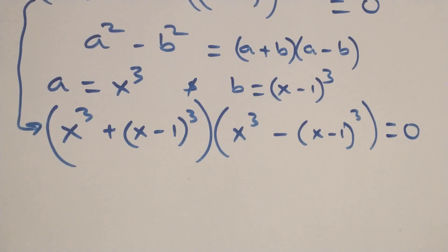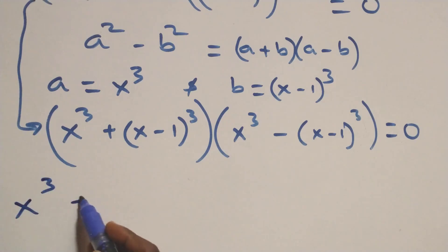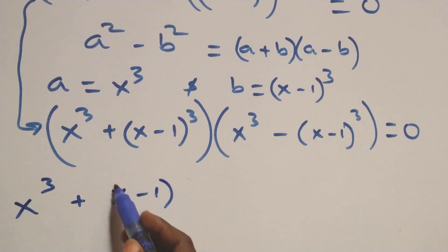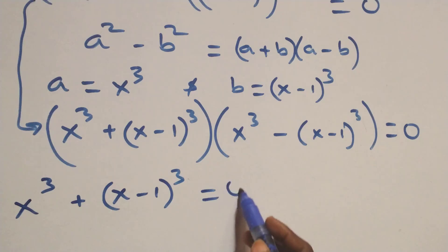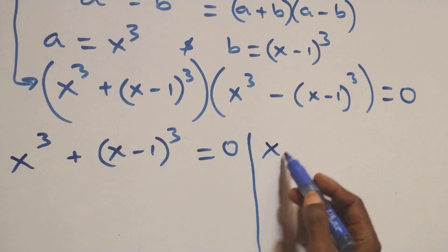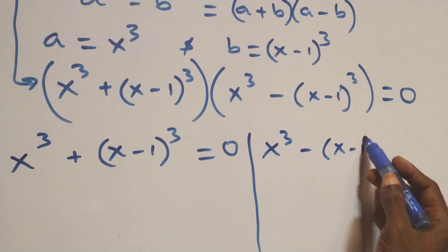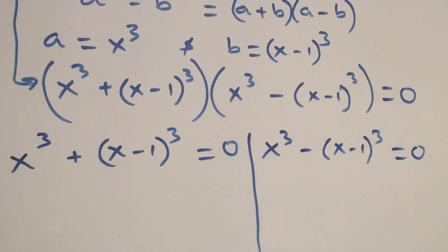We now have two possible cases. The first case: x raised to power 3 plus (x minus 1) raised to power 3 equals 0. Or the second case: x raised to power 3 minus (x minus 1) raised to power 3 equals 0.